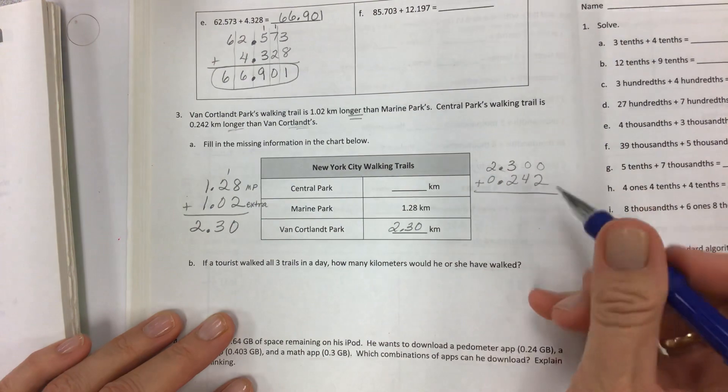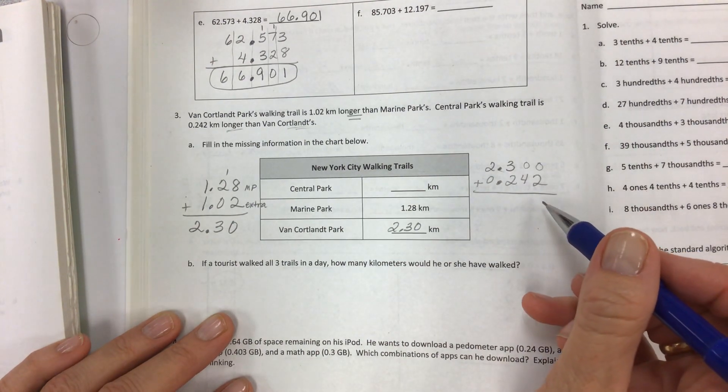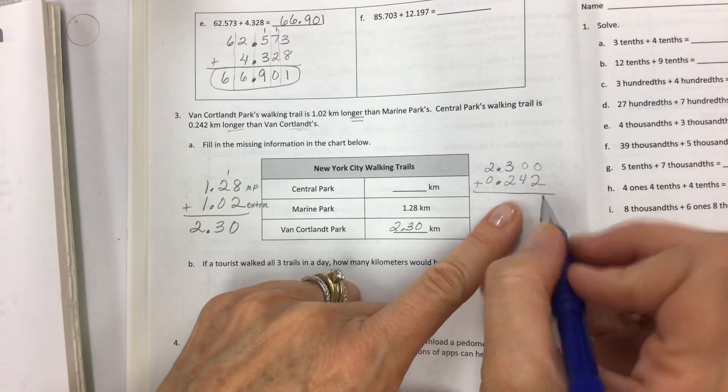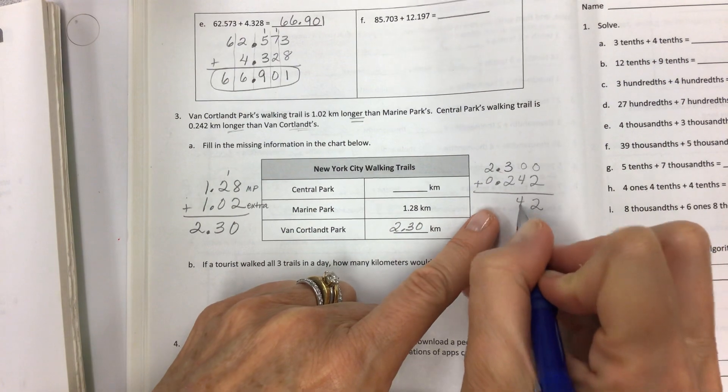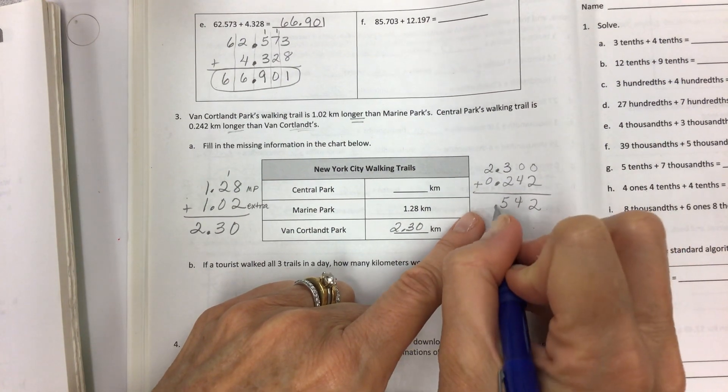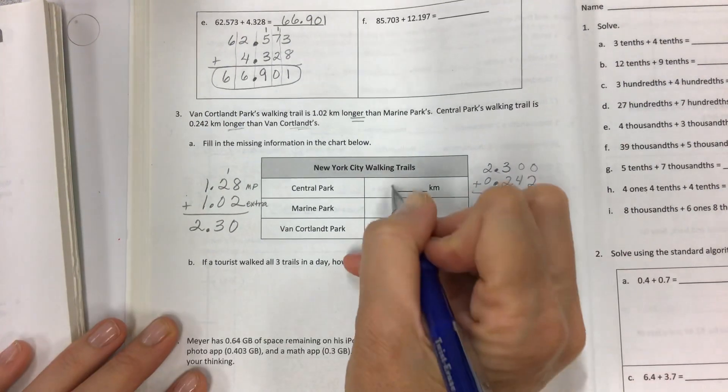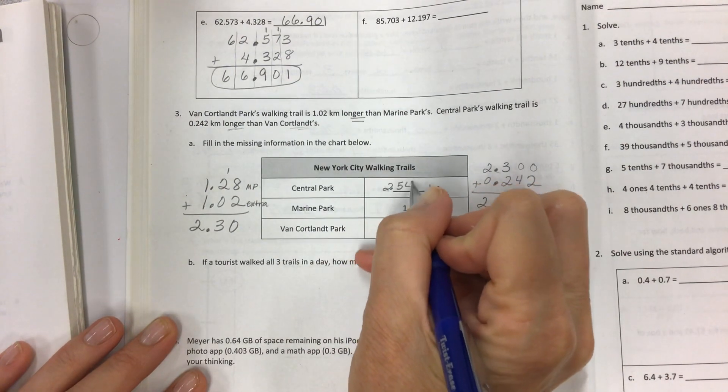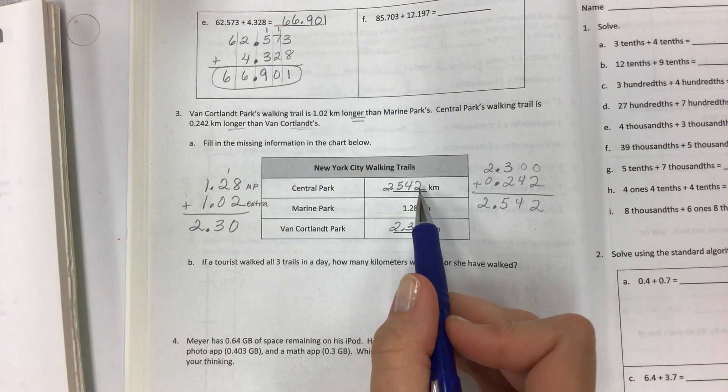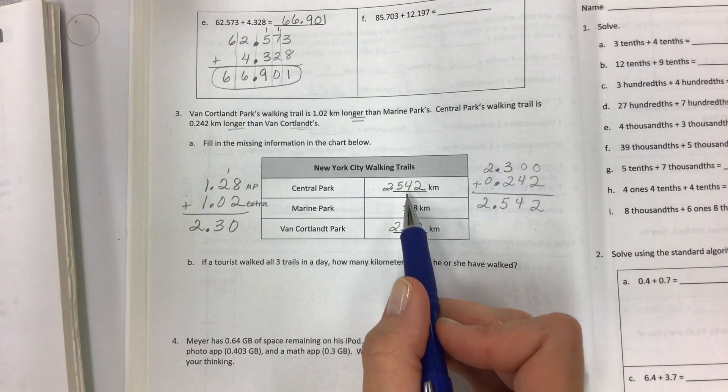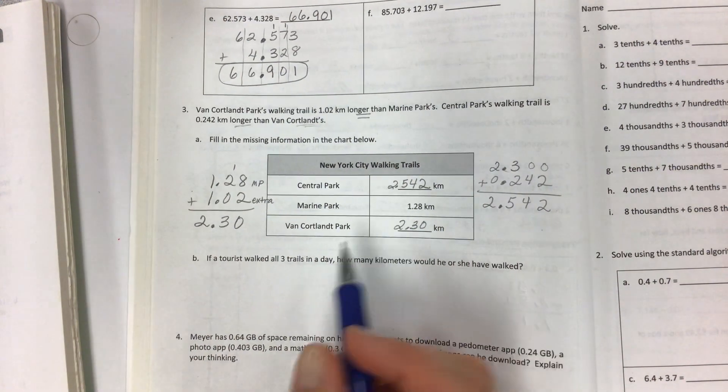Now we have to add it. What do you do when you're adding and nothing is there? Well, you don't have to do anything, but if you put zeros it'll make it a whole lot more clear. Now that you have zeros, put your decimal down: 2 + 4 = 5, and then 2.542 kilometers is the distance around Central Park's walking trails.